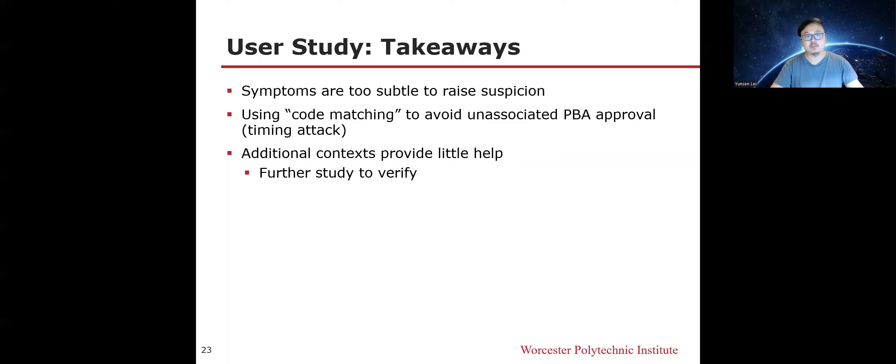To summarize our findings: depending on adversary capabilities, the symptoms associated with phone-based authentication attacks can be too subtle to raise suspicion. We recommend identity providers use code-matching-based approval requests to avoid unassociated approvals. Our user study suggests that additional context in authentication requests provides little help in detecting attacks, and further study is required to verify this.